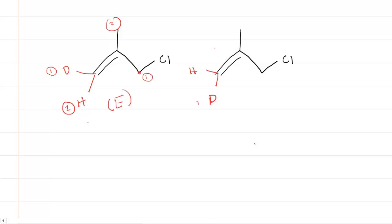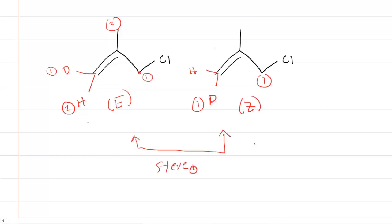In the other structure, the number-one groups are on the same side, giving the Z isomer. These are therefore stereoisomers — specifically diastereomers — which means those two hydrogens are chemically distinct. Anytime you replace one hydrogen with deuterium and vice versa on the other structure and get stereoisomers, you have chemically distinct hydrogens. In technical terms, those hydrogens are diastereotopic.